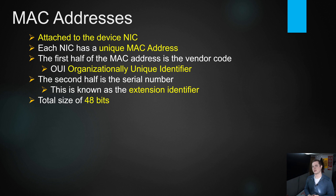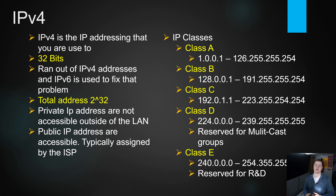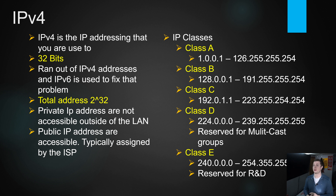IPv4 is a 32-bit addressing scheme that's been around for a long time. We're now out of IPv4 addresses, so IPv6 was created to fix that problem. IPv5 doesn't exist because when it was created it didn't work — there were problems — so they had to create another version of the internet protocol, which became IPv6.